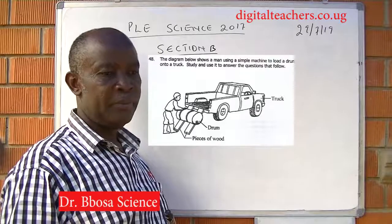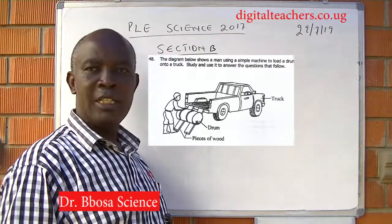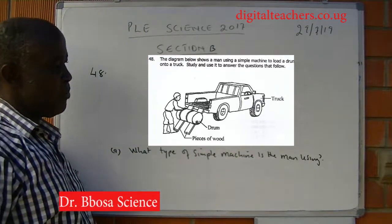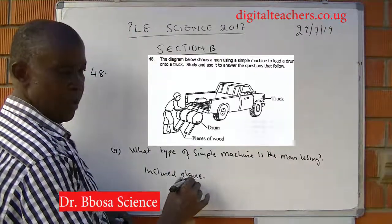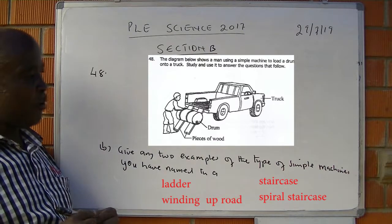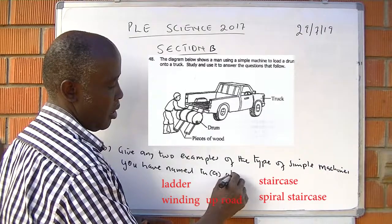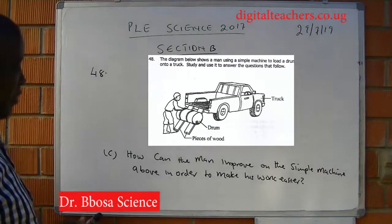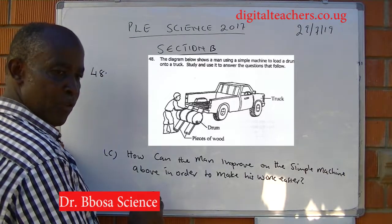The diagram below shows a man using a simple machine to load a drum on a truck. Part A: what type of simple machine is the man using? That is an inclined plane. Part B: give any example of the type of simple machine named in A above. That is a ladder. Part C: how can the man improve on the simple machine above to make his work easier? By making the piece of wood longer.